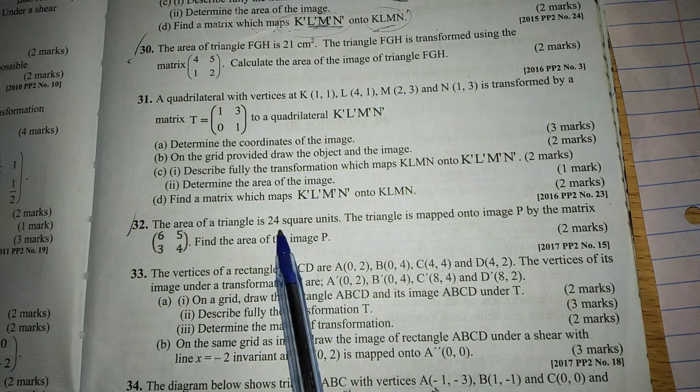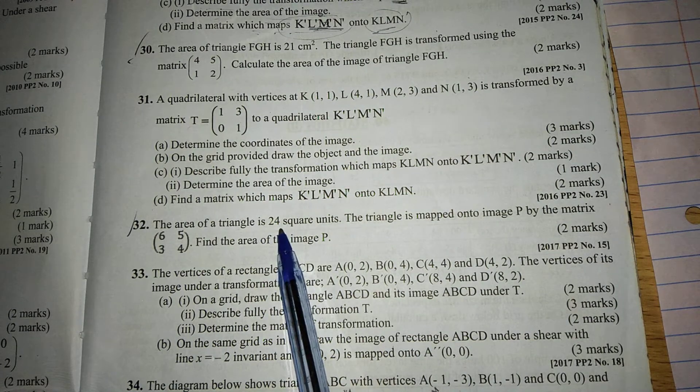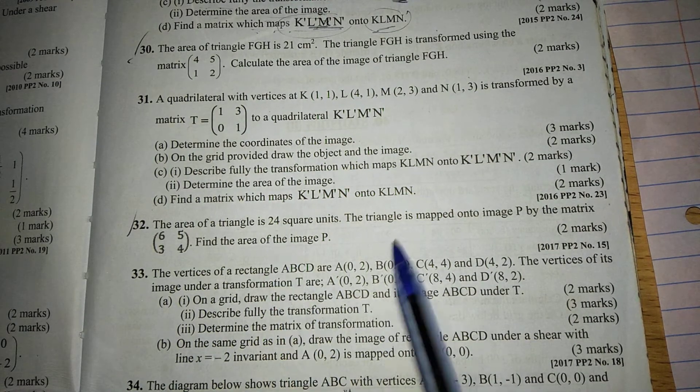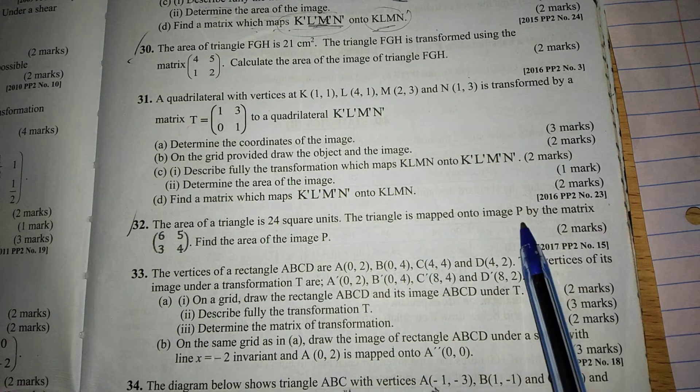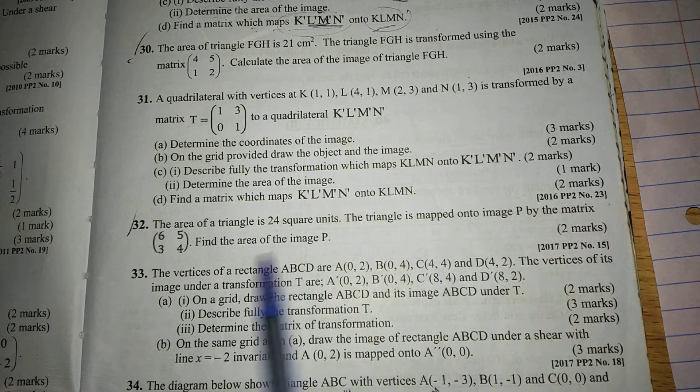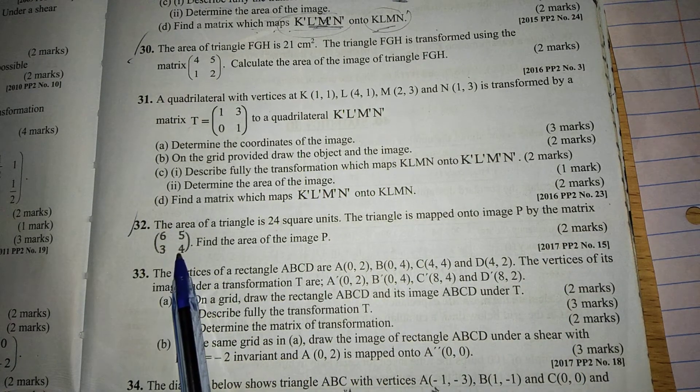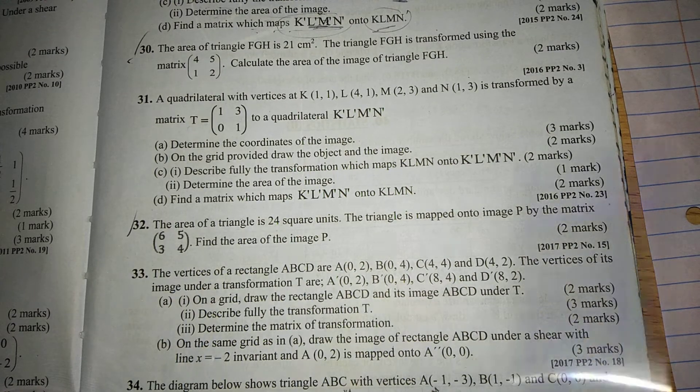The area of a triangle, for example, is 24 square units. The triangle is mapped onto image P by the matrix (6,5,3,4). Find the area of the image P.